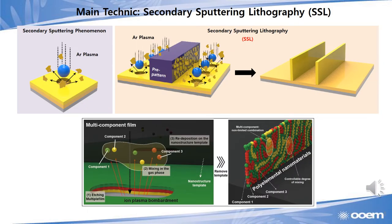This is the main technique of OEM that is called secondary spot lithography, or SSL. By using secondary spot lithography, we can make very high resolution and high aspect ratio nanopatterns. It is basically derived by attaching metal nanoclusters on the wall of a pre-pattern using argon plasma. So, after removing the pre-pattern, we can make very thin wall-like nanopatterns.